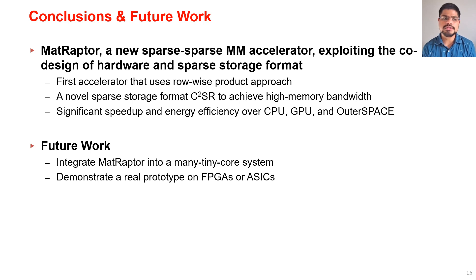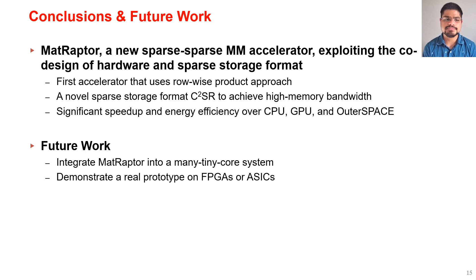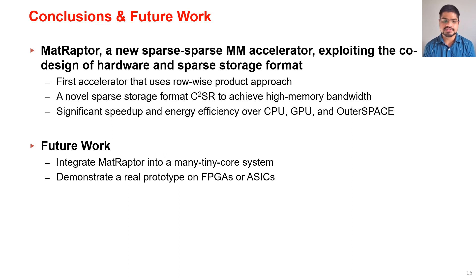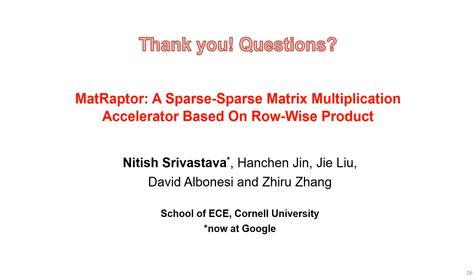To conclude, Matraptor is a new sparse-sparse MM accelerator that exploits the co-design of hardware and sparse format. It is the first accelerator to use the row-wise product approach. It proposes a novel sparse storage format C²SR to achieve high memory bandwidth, and achieves significant speed-up and energy efficiency over CPU, GPU, and OuterSPACE. For future work, we are integrating Matraptor into a many-core system and demonstrating a real prototype on FPGAs and ASICs.